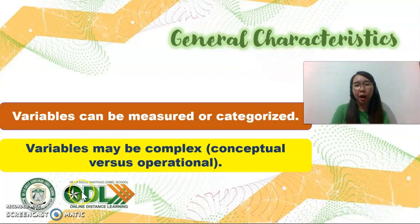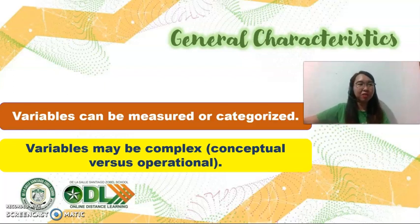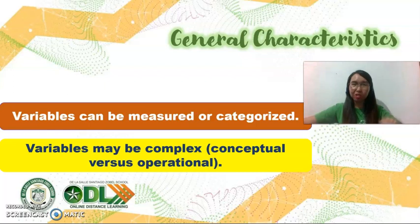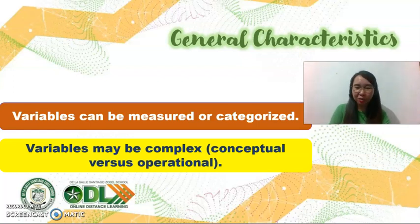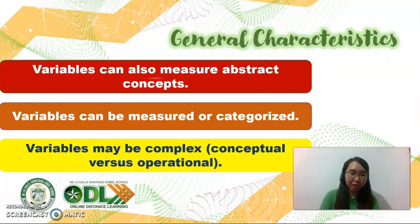Another example is academic achievement. Some researchers use it to mean just the participants' test scores in a quarter, while other researchers use academic achievement as the totality of the participant's grade for the whole school year. So it actually varies from one research to another. Last but not least, research variables can measure abstract concepts — intelligence, sense of religiosity, well-being, self-esteem — these are popular terms and are generally called variables.